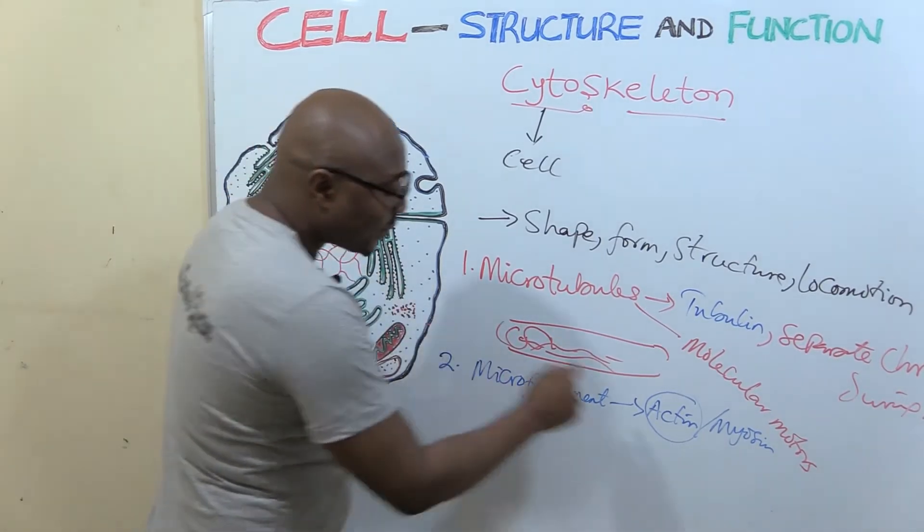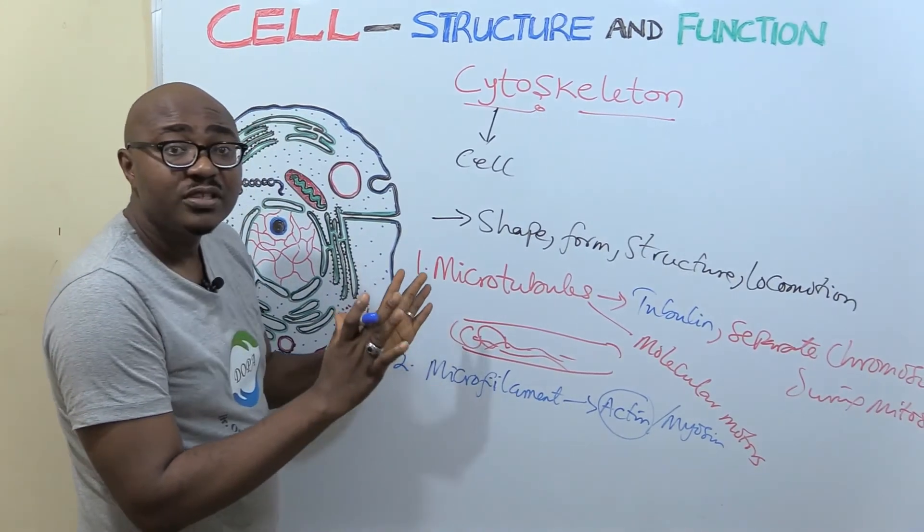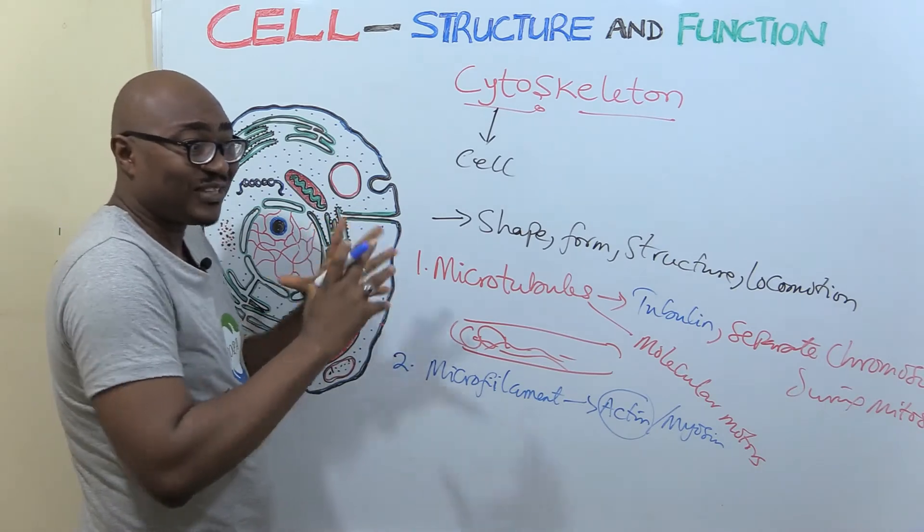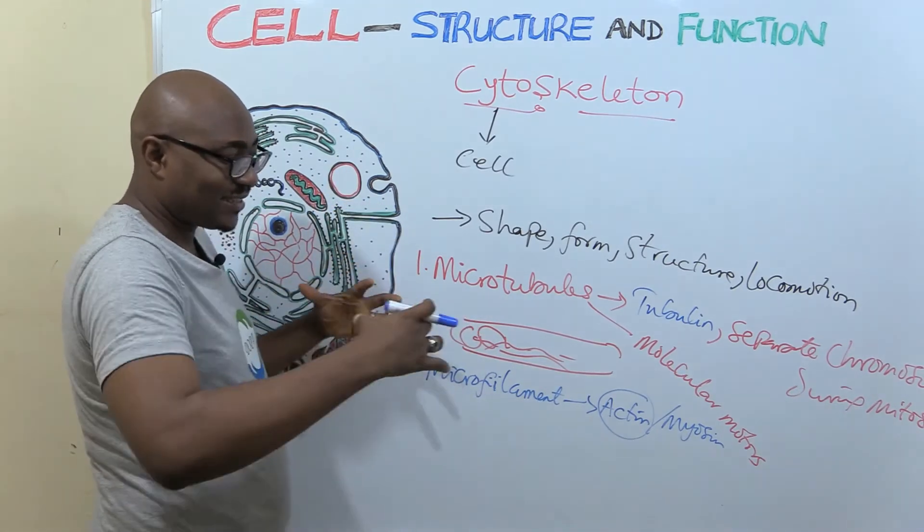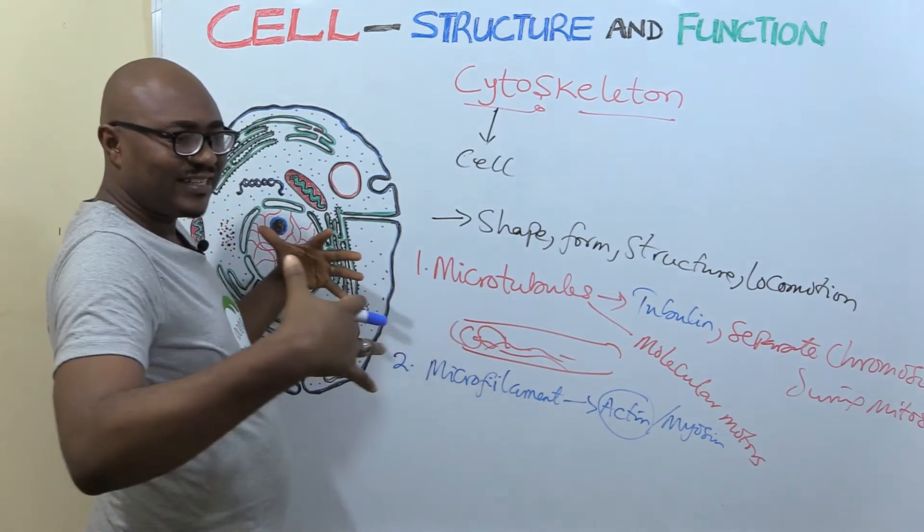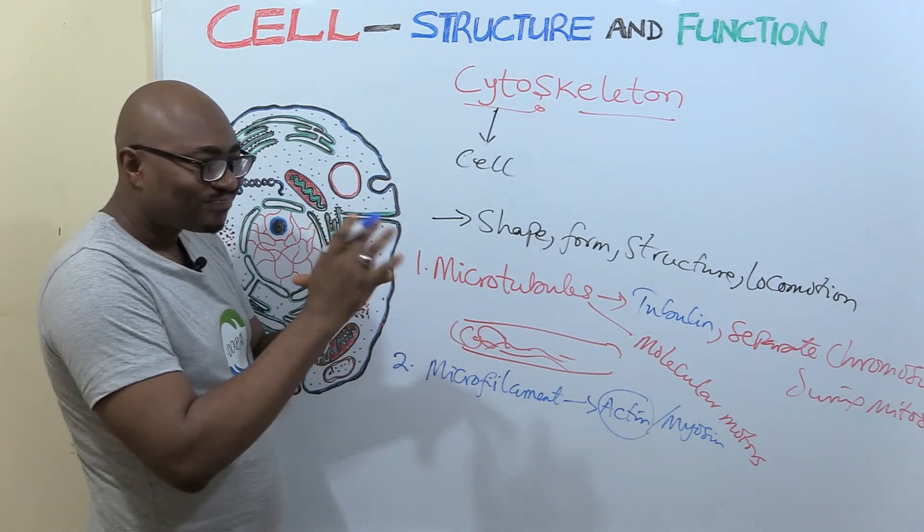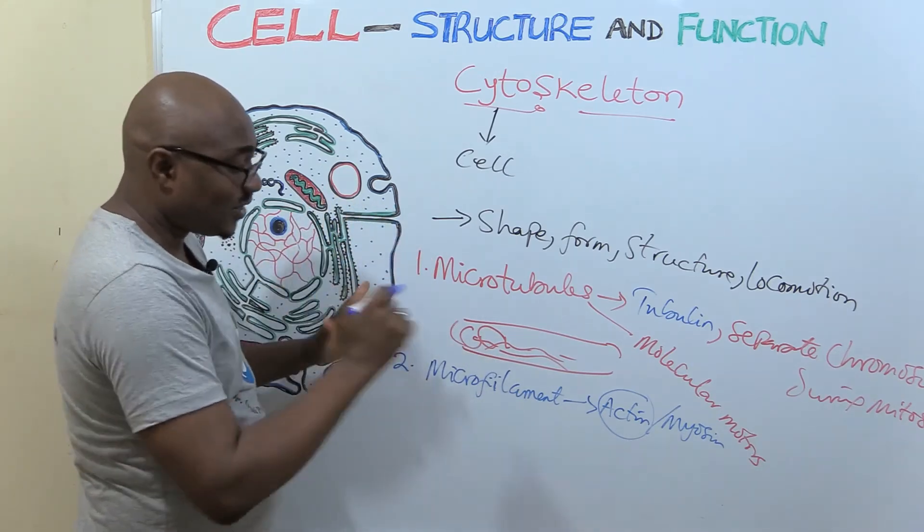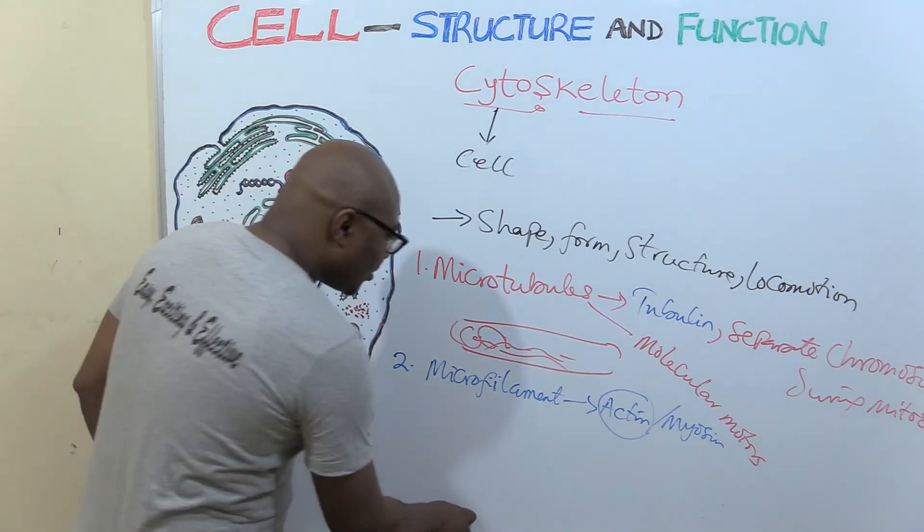So another very important one, in conjunction with myosin, it helps in contraction. Especially the ones that have it so abundant, very prominent, is muscles. They have a lot of actin and myosin. So they slide together, when they slide together they contract. When they unslide, they relax. You're going to learn all of that in excitable tissues, muscles and nerves. So it's actin that does that, microfilament.